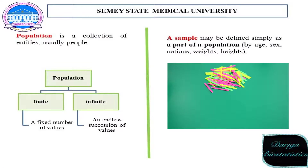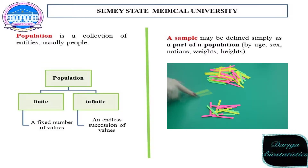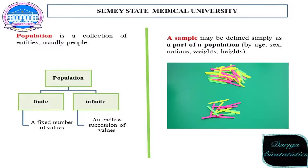The next concepts are population and sample. Population is a collection of entities, usually people. Population has two types: finite – a fixed number of values – and infinite – an endless succession of values. A sample may be defined simply as a part of a population, characterized by age, sex, nationality, weight, and height. In the video, drumsticks are shown: all drumsticks are the population, and the selected drumsticks are the sample. Many statistical packages exist to calculate sample size from a population.